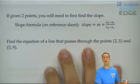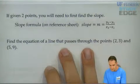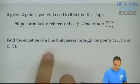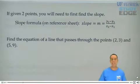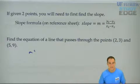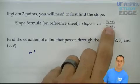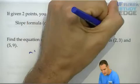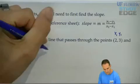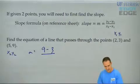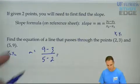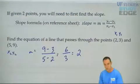What if they give you two points? Given a point and a slope, I use point slope form. Given two points, you need to first find the slope, and then you can find the equation of the line. Find the equation of a line that passes through the points (2, 3) and (5, 9). Remember, slope is change of y over change of x. It's y2 minus y1 divided by x2 minus x1. You'll get 9 minus 3, which is 6, and 5 minus 2, which is 3. The slope of this line is 2.